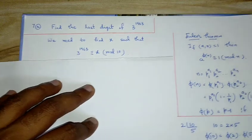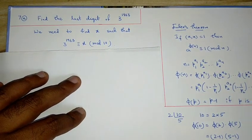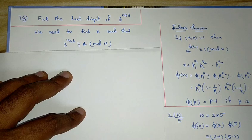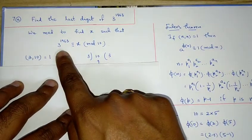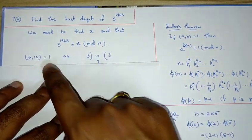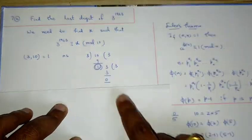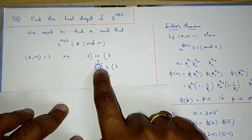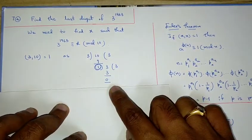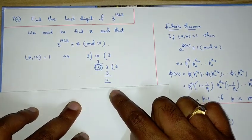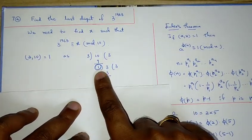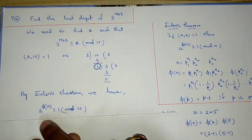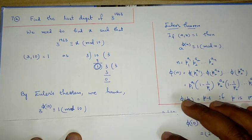To find the last digit of 3^1963, we need x such that 3^1963 ≡ x (mod 10). First, we verify gcd(3, 10) = 1. Dividing 10 by 3 gives remainder 1, and dividing 3 by 1 gives remainder 0. The last non-zero remainder is 1, so gcd(3, 10) = 1. By Euler's theorem, 3^φ(10) ≡ 1 (mod 10).